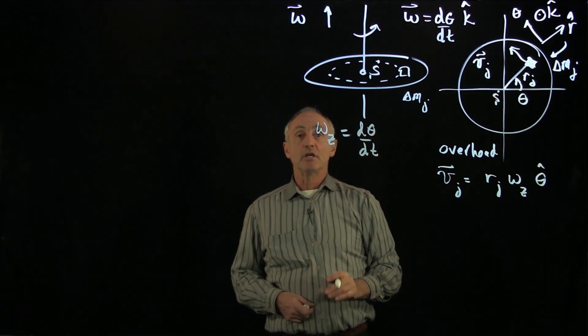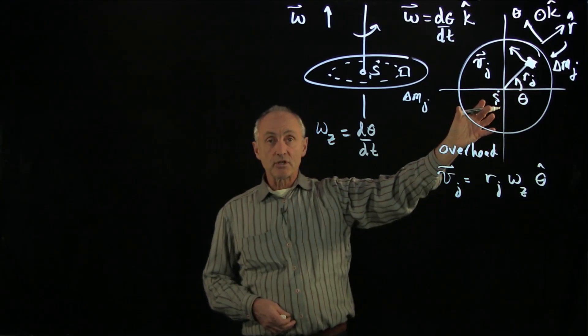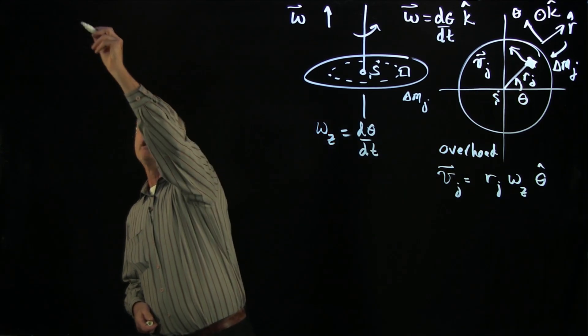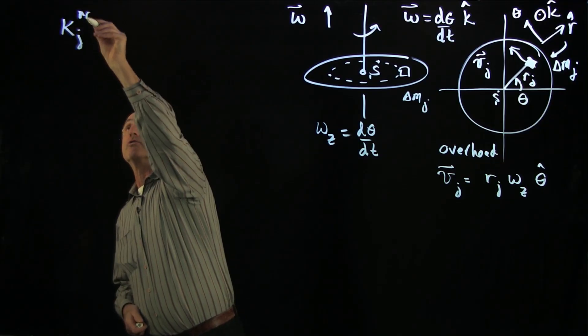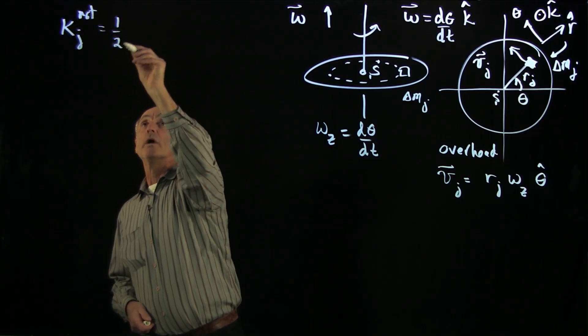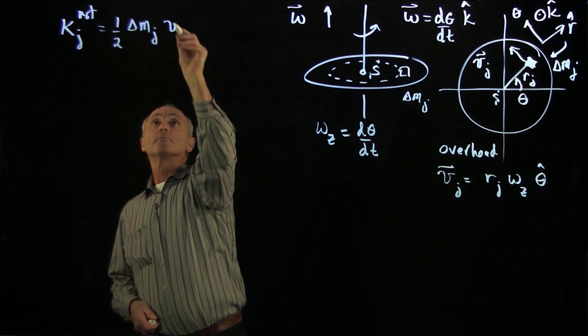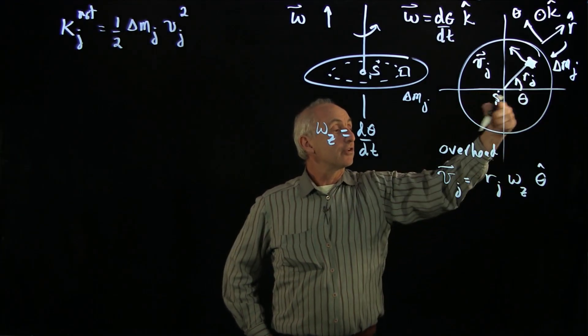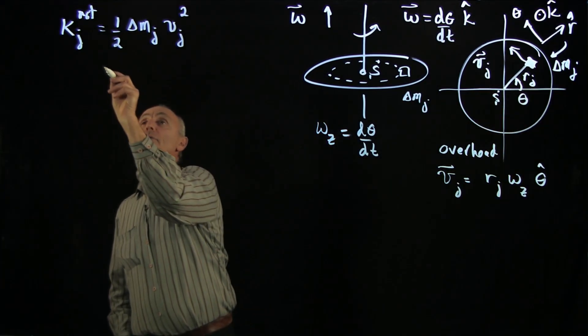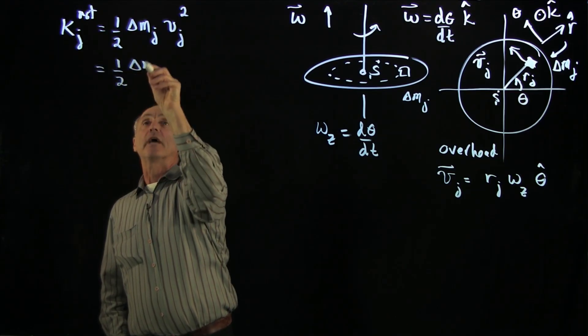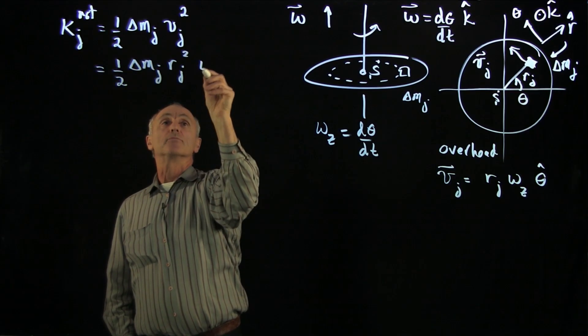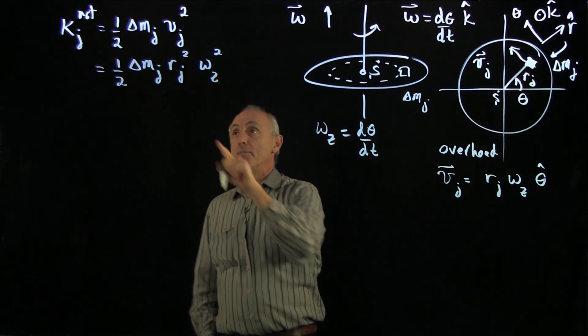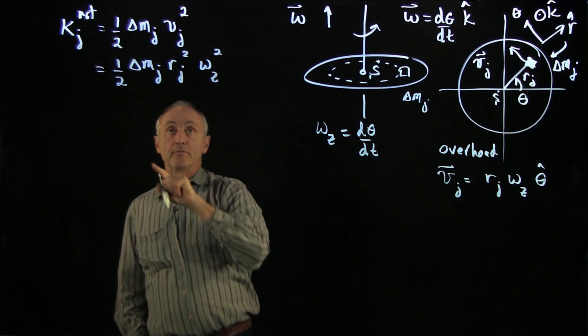Now what we'd like to discuss is the kinetic energy. The way we're going to consider kinetic energy is we're going to sum up the rotational kinetic energy of every single mass element. So we begin by writing K_j rotational, and we know that that is just one half times the mass element times the velocity of that element squared. Now we can use our relationship for the tangential velocity element related to the angular velocity, and we have one half delta m_j r_j squared times omega_z squared. Keep in mind that omega_z is the same for every single mass element, but the distances of the mass elements are all different by r_j.